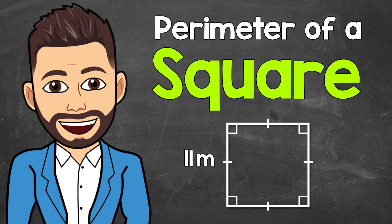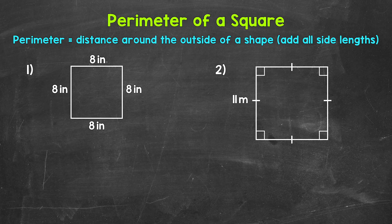Welcome to Math with Mr. Jake. In this video, I'm going to cover how to find the perimeter of a square. Now remember, perimeter is the distance around the outside of a shape. Let's jump into our examples, starting with number 1.